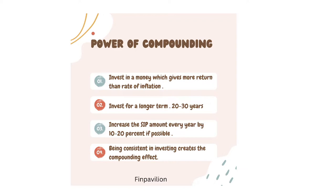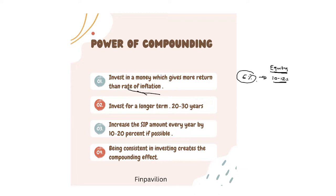Power of compounding: invest in assets that give you more return than the inflation rate. Currently the inflation rate is around 6%, so you should invest in asset classes that give you more than 6%. Equities, for example — if you are investing in equity mutual funds you are getting somewhere around 10 to 12% returns, which is more than inflation, so that is always good.